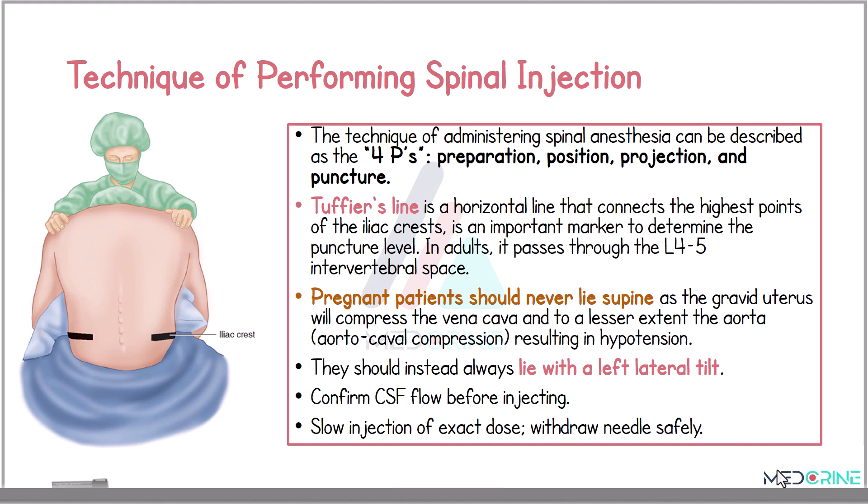The spinal anesthesia injection technique can be remembered using the four Ps: preparation, positioning, projection, and puncture. The Tuffier's line is a horizontal line that connects the highest points of the iliac crest, and this is an important marker to determine the puncture level. In normal adults, this line passes through the fourth and fifth intervertebral space.